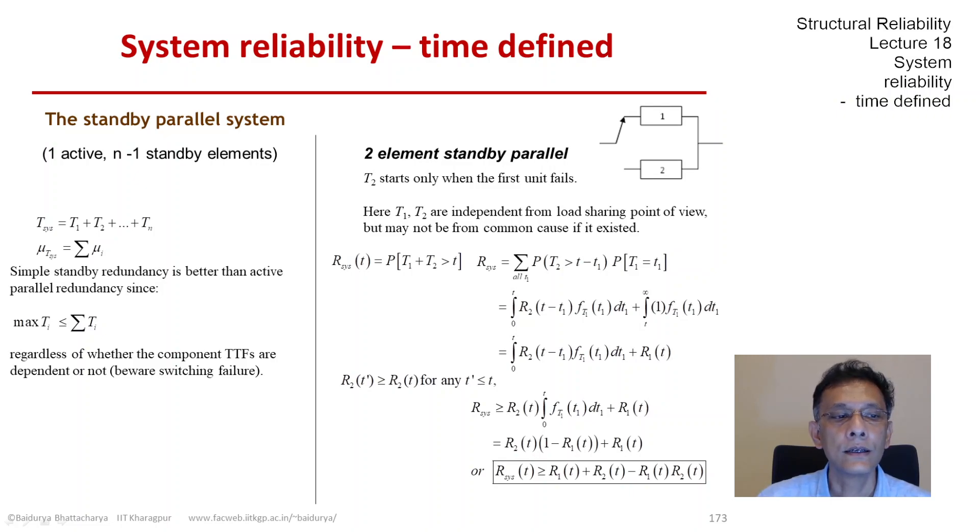Let's look at a two-element parallel system. The system reliability is P(t_1 + t_2 > t), and we can employ the theorem of total probability. That gives the integral from 0 to t of R_2(t - t_1) times the density of t_1. That is the contribution of the second element, the spare. The first one is R_1(t).